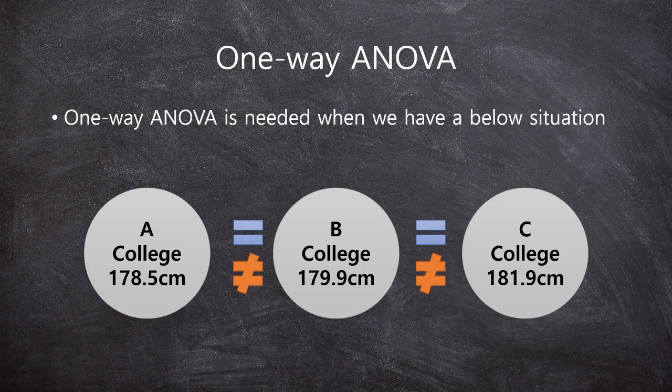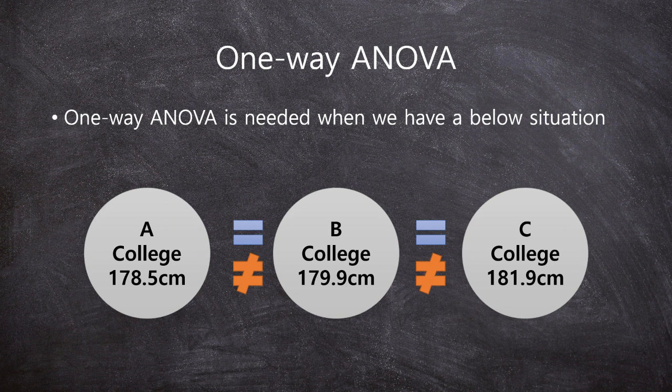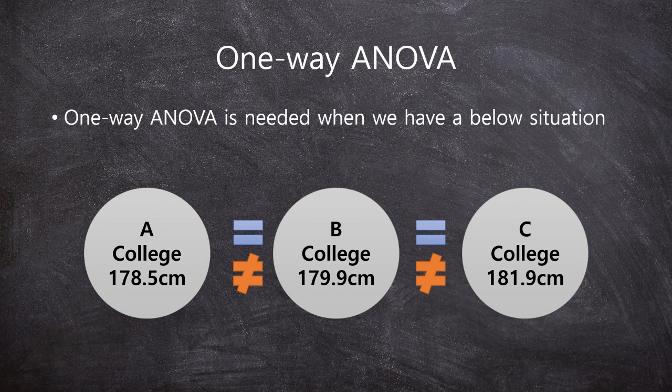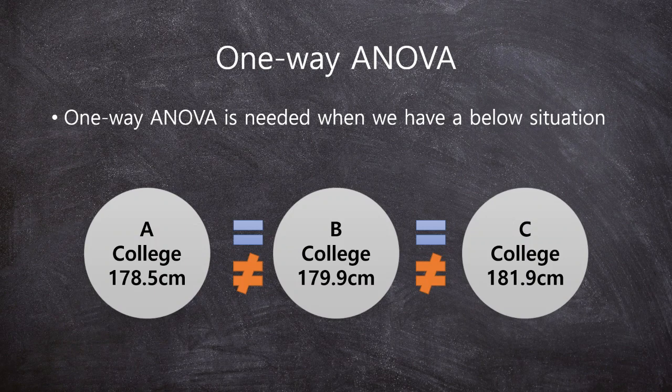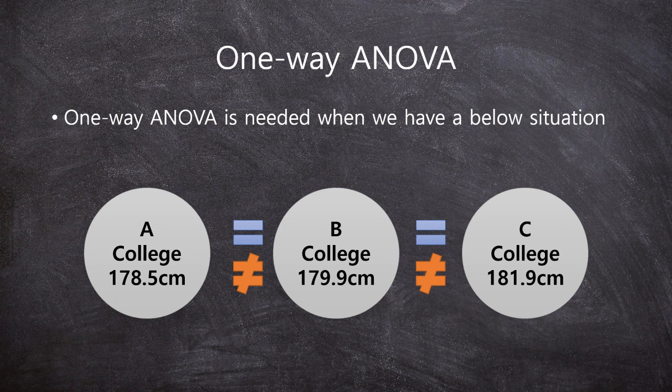We know and we have many times talked about we need to learn one-way ANOVA when we have this situation. We have three groups. Likewise, we have three college male students height and we want to compare the means average of male students height of three colleges.